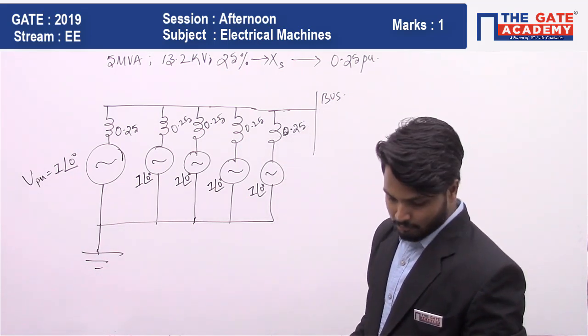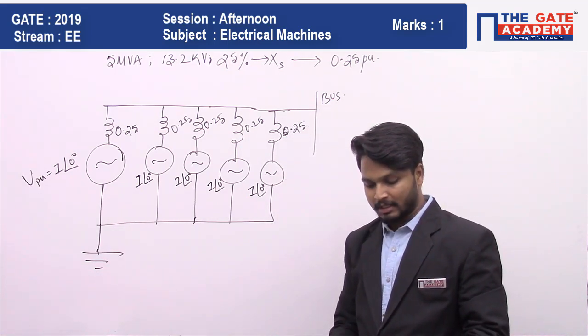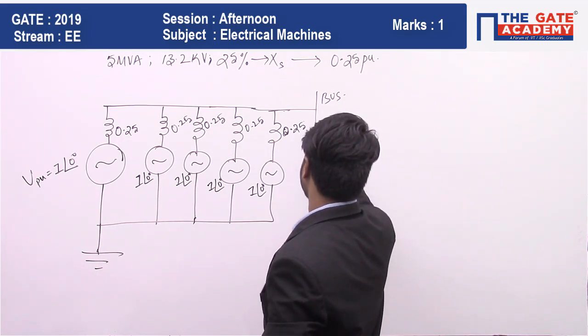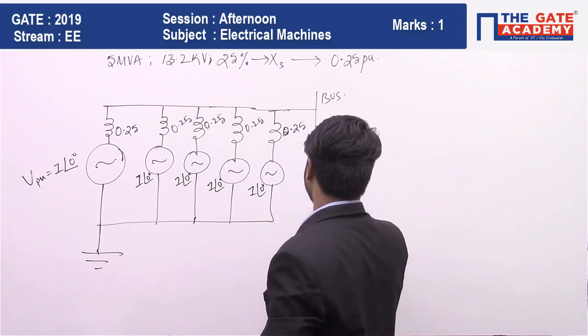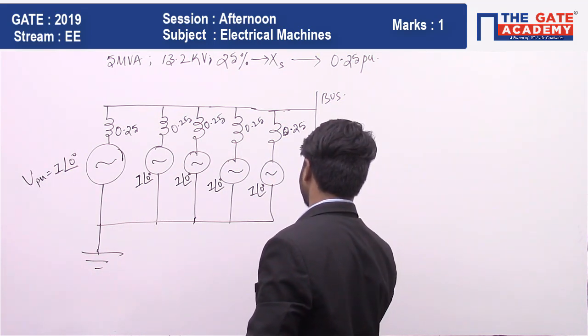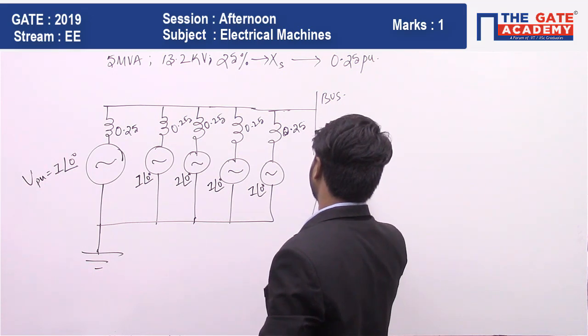And in the question, it is asked that the short circuit level in MVA at the bus bar is? If a short circuit fault occurs at the bus bar between the ground and the bus bar, then what is the fault level?